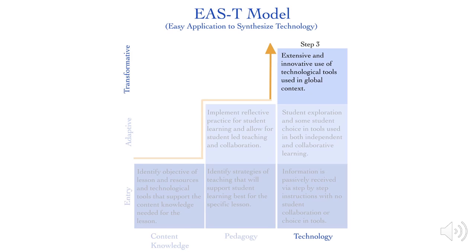The highest step on the EASE-T model is the use of transformative technology. This takes the lesson objectives identified in step one, incorporates student-led teaching and reflection, and tops off the learning experience with extensive, innovative use of technological tools used in a global context. This level of engagement includes students not only learning content but sharing content in a way that has potential to reach others anywhere in the world — this may include creating a blog, creating and sharing podcasts, creating media stories, and many other things that may not even exist yet but will in the future. Students will benefit from reaching this innovative stage as they move into jobs that will value the skill of innovation.